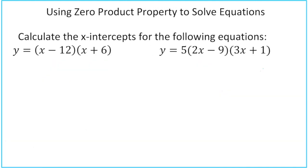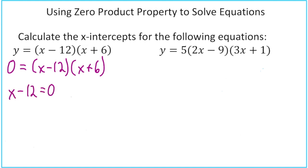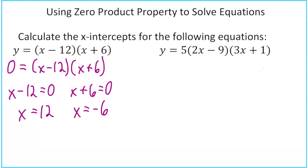One of the most common uses of zero product property is to find the x-intercepts of an equation, because when you want to find the x-intercept, you let y equal zero. So looking at our first problem, we add the simple step of letting y equal zero. Now we can say x minus 12 equals zero or x plus 6 equals zero. Moving the negative 12 gives positive 12, and moving the positive 6 gives negative 6. Since we're solving for x-intercepts, we write them as (12, 0) and (−6, 0).